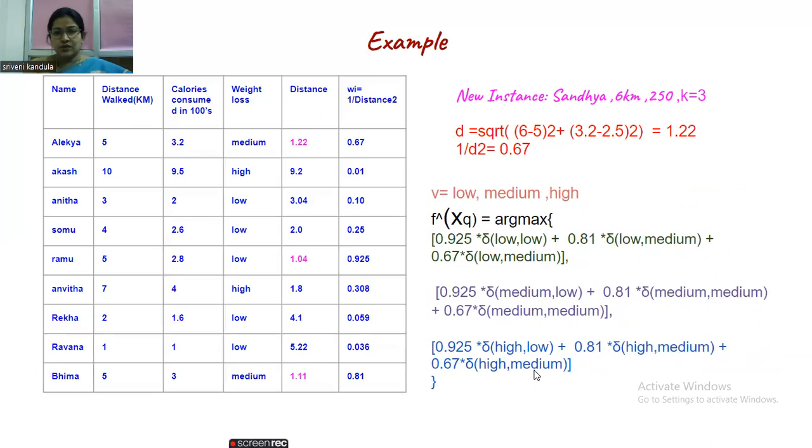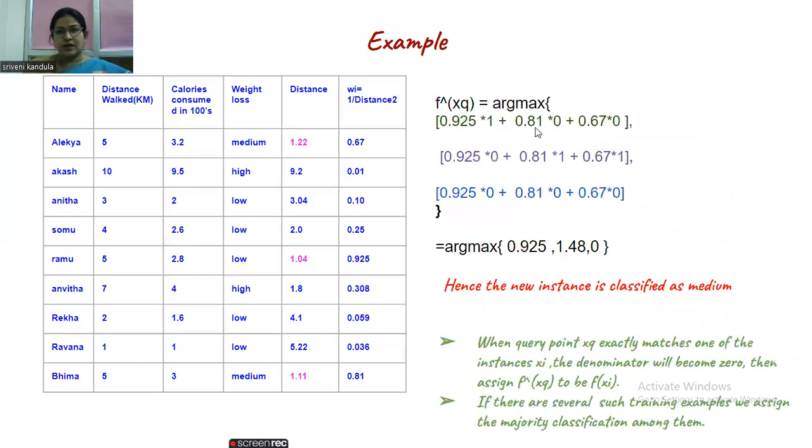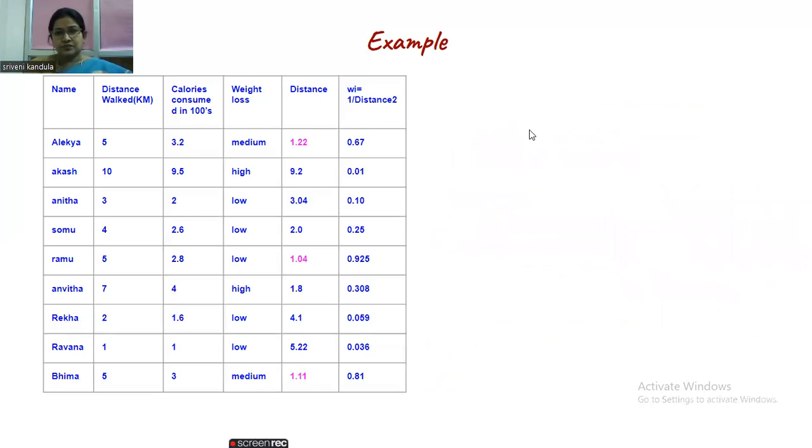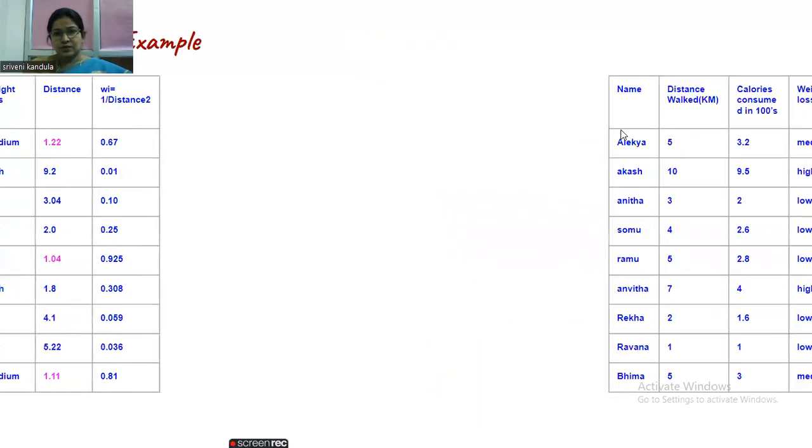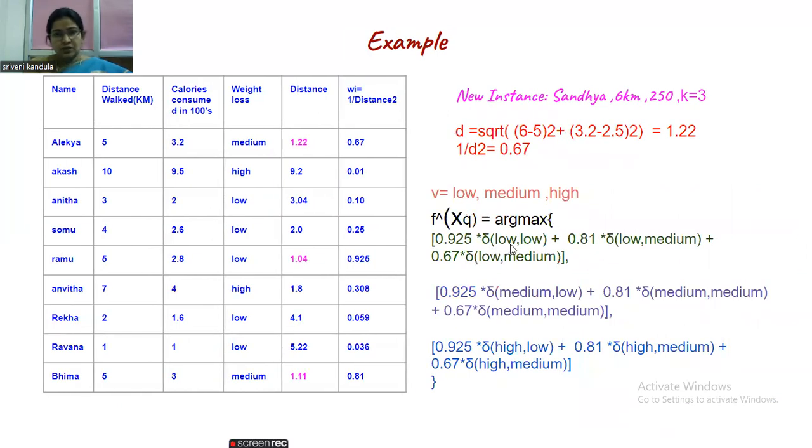Now let us give the values for this. We already know what is the δ value. If both v and f(xi) are the same, we give a value 1, otherwise 0. Here both are same, so 1. Rest of the two is 0. This is 0. Medium and low, different values, so 0. Medium and medium, same, so value of 1. Medium and medium, value 1. High and low, different, so 0. High and medium, 0. High and medium, different value, so 0.